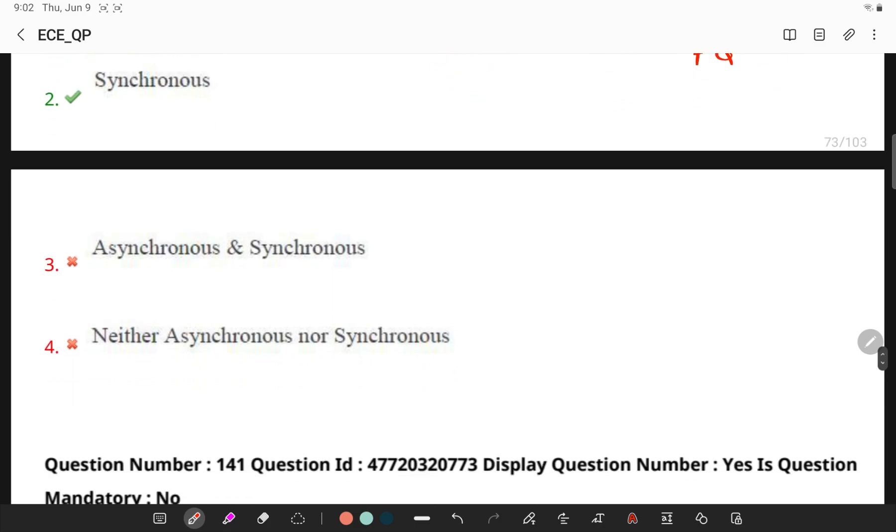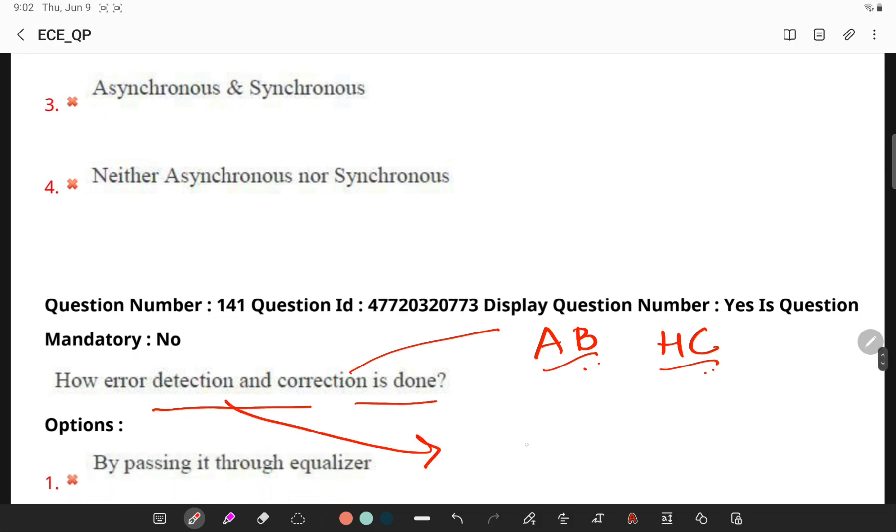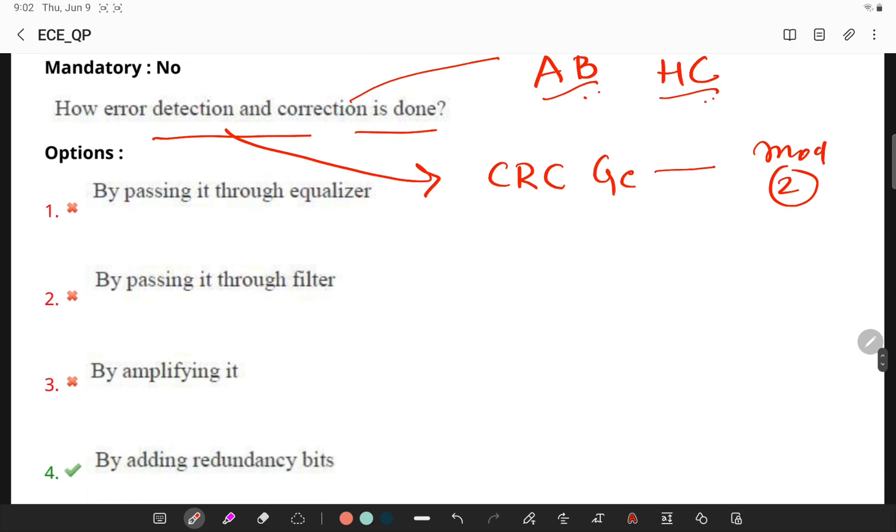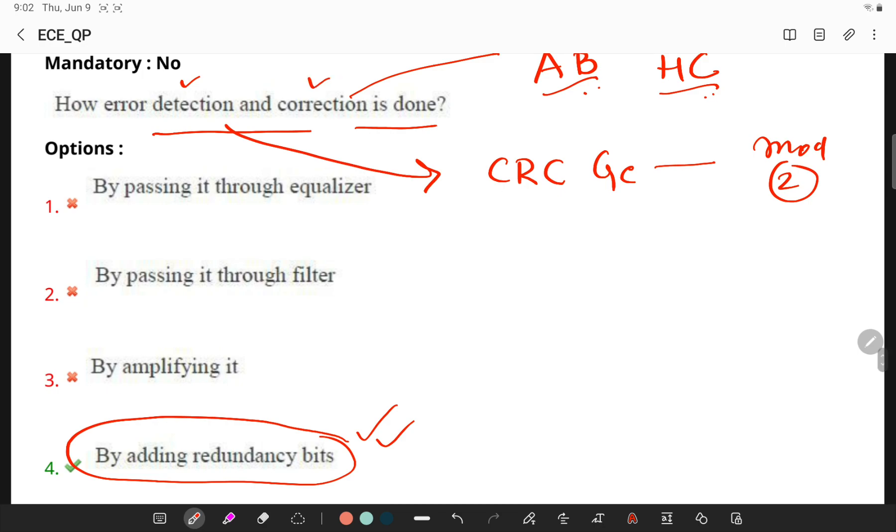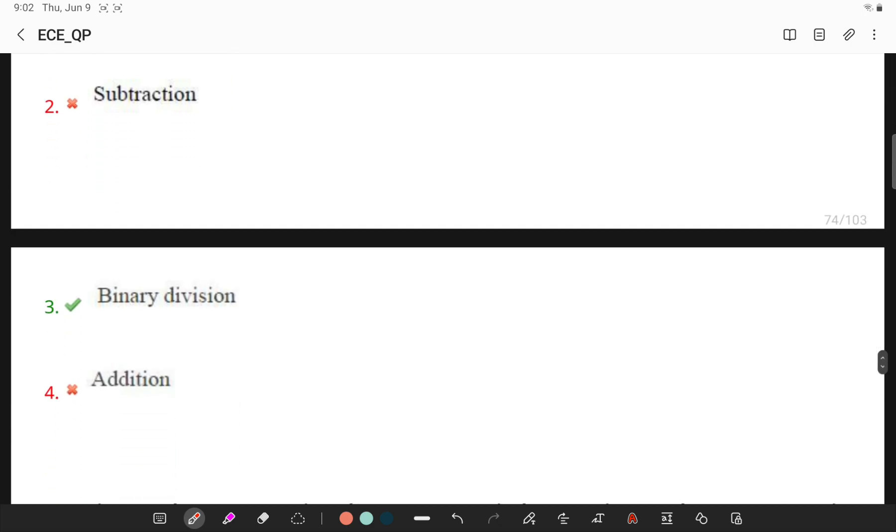Now let's get back to the next question. How error detection and correction is done? Error correction requires additional bits which are redundant to deduce what the correct bits must have been, and here you use Hamming codes. Whereas error detection is done by CRC generator which uses modular 2 division. So if you see the answers here, by adding the redundancy bits we are having error detection and error correction.